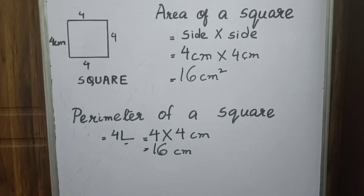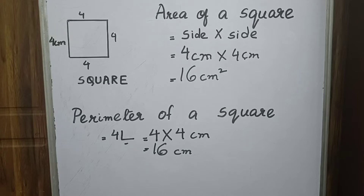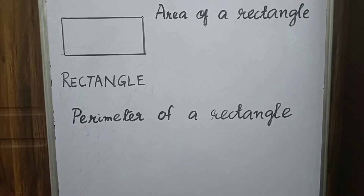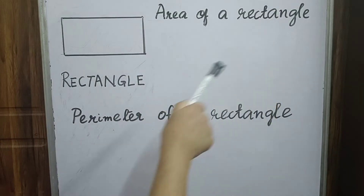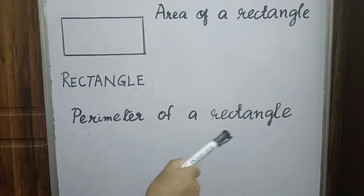So now we have come to know the area and perimeter of a square. Next, we will find out the area and perimeter of a rectangle.